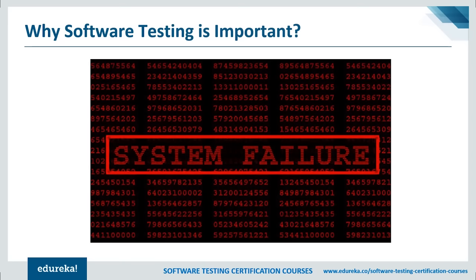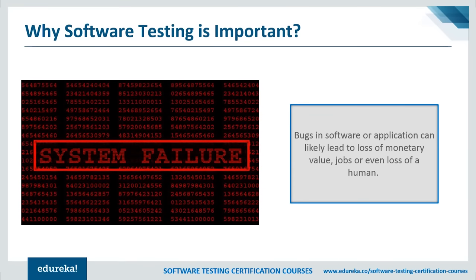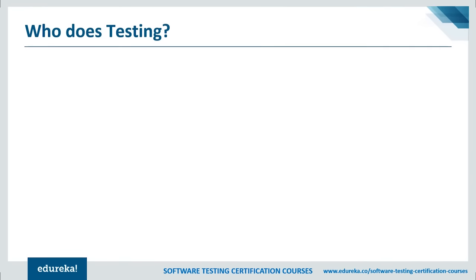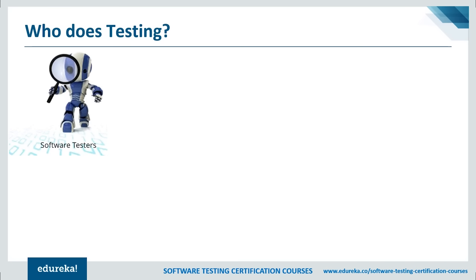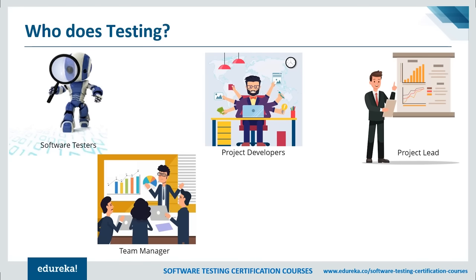Software testing plays a significant role — if bugs or defects are not properly removed from the system, it might lead to system failure. Now, who performs software testing? The answer depends on the process and connected project stakeholders. In IT, big companies have team members who bear the responsibility for evaluating the software based on requirements during the test phase. People who can do testing include software testers, project developers, project leads, team managers, and end users.